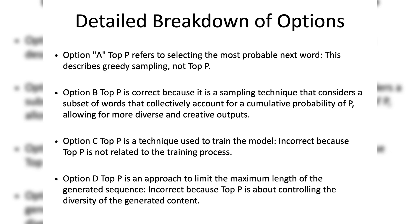Let's take a look at each option one by one. Option A: top P refers to selecting the most probable next word. This describes greedy sampling, not top P. Greedy sampling always picks the highest probability word, which can lead to predictable and repetitive outputs, not the diversity that top P provides.